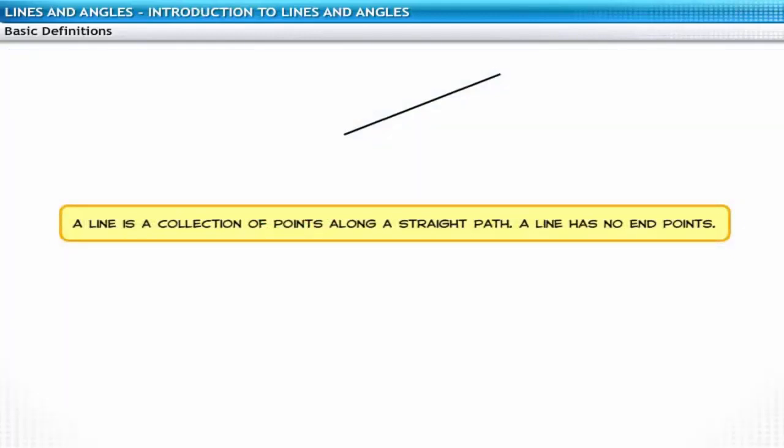A line is a collection of points along a straight path. A line has no endpoints. A line can be extended indefinitely in both directions. Let's call this line AB. It is denoted by a double headed arrow. Sometimes lines are also denoted by small letters L, M, N and so on.